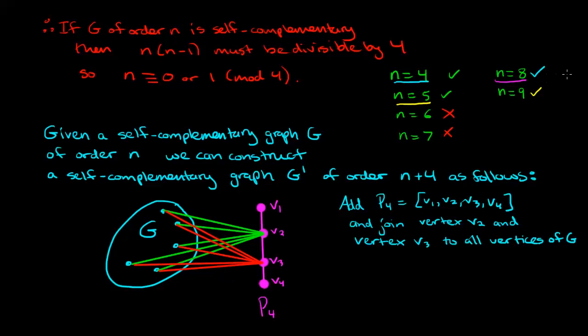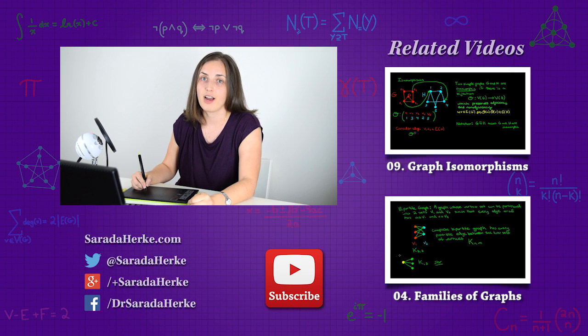Similarly, because we have one for n equals 8, we can make one for n equals 12, and because we have one for n equals 9, we can make one for n equals 13, and we can keep going like this. So we've just learned that having order 0 or 1 mod 4 is a necessary and sufficient condition for the existence of a self-complementary graph of order n.